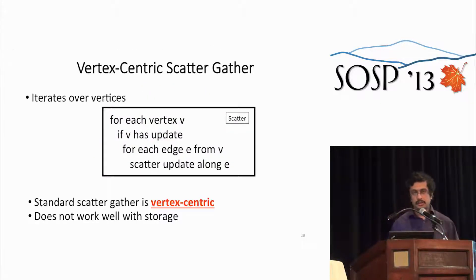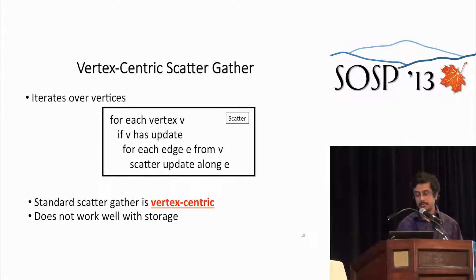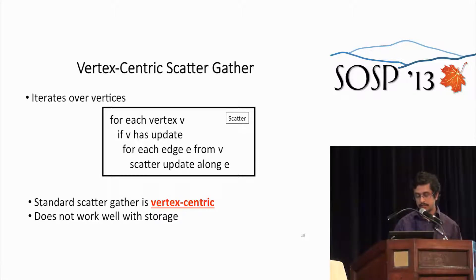When you look at scatter-gather, it's basically a vertex-centric model — you iterate over vertices. In the scatter step, you go over each vertex V; if V has an update to send out, you look at each edge E from vertex V and scatter the update along E. It turns out that the standard vertex-centric scatter-gather model does not work well with storage.